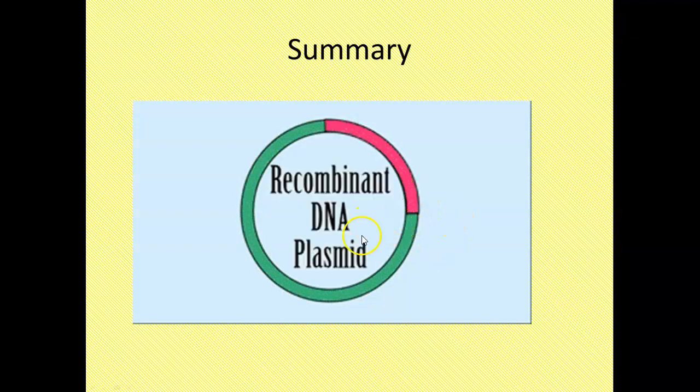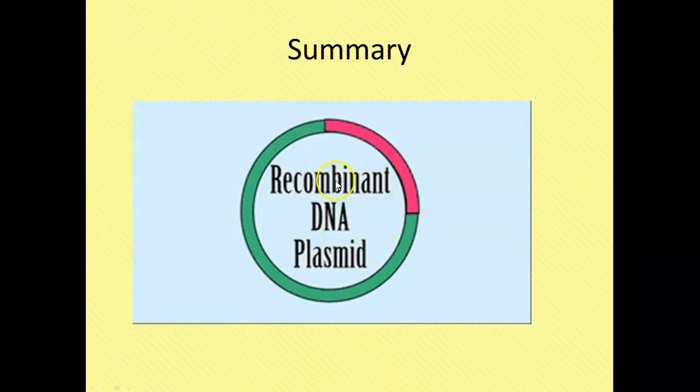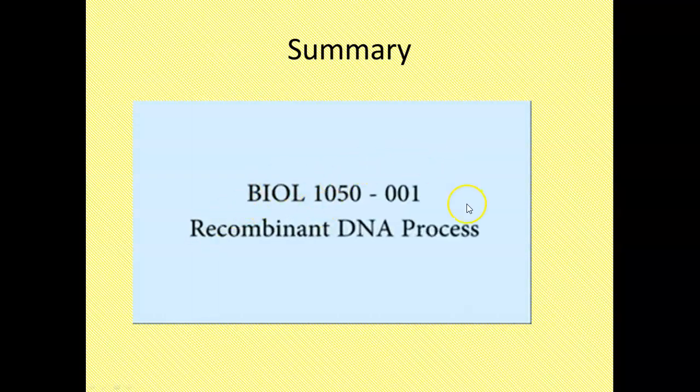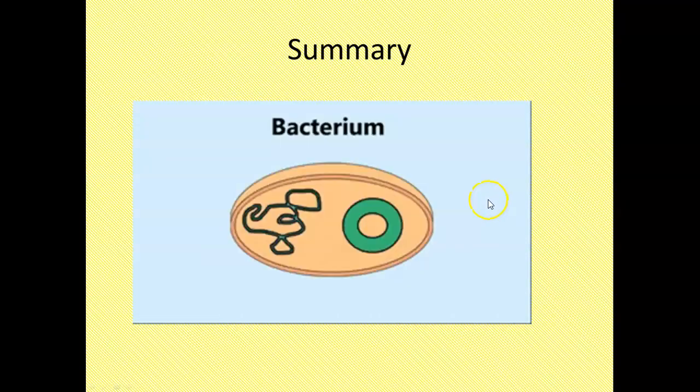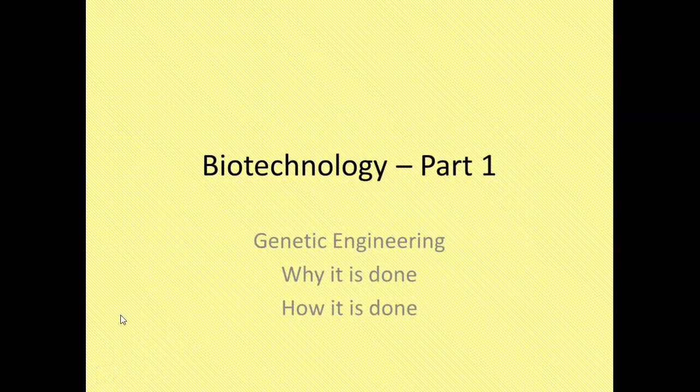And then once we've got this plasmid, we have recombinant DNA. We can stick that into a bacteria. We can stick that into another organism. And we're all set. So that's it. That's how we can genetically modify organisms. Now what I want you to do is you have an article to read on NewsELA about genetically modified organisms and what you think about them.